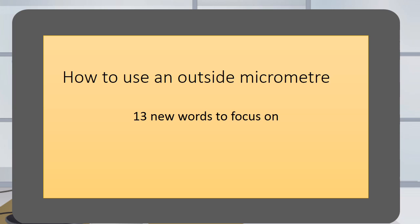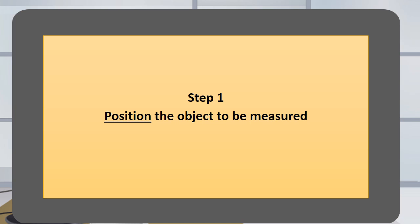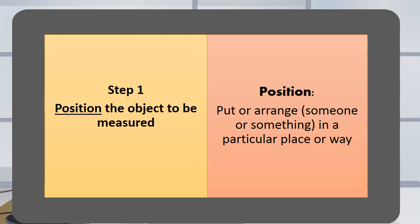How to use an outside micrometer. Step 1. Position the object to be measured. Position means to put or arrange something in a particular place or way.